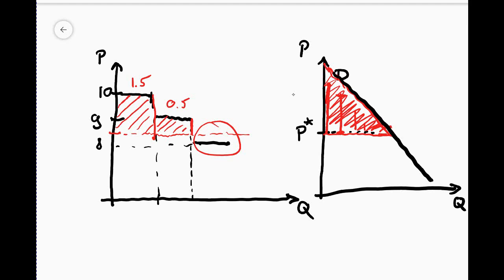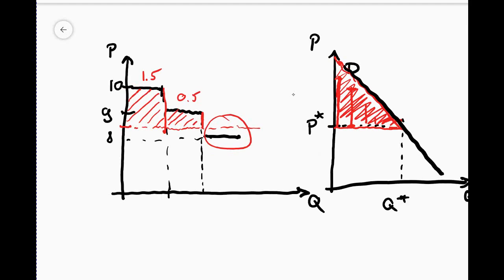So how could you calculate this? Of course using the formula for the area of triangles that you learned in elementary school. So if you have Q star, you have P star, and here you have the intercept which would be the maximum price which a consumer is willing to pay for this good, then the consumer surplus is nothing else than P max minus P star times Q star divided by 2.